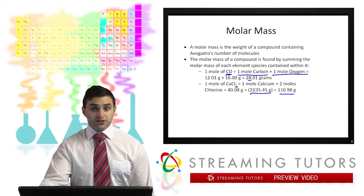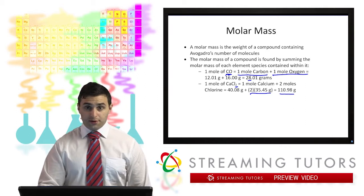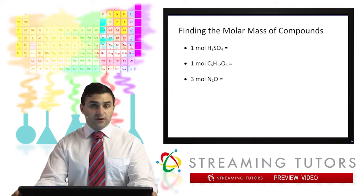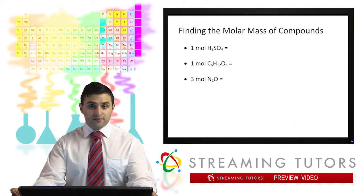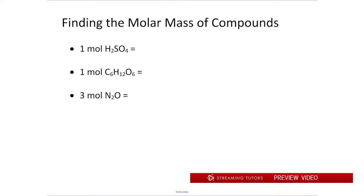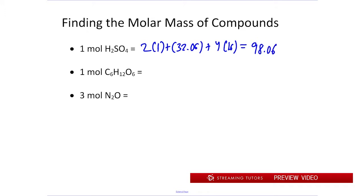Finding the molar mass of a compound is pretty straightforward, but it's also going to be an extremely important skill. Let's find the molar mass of some compounds. First, we have H2SO4. That has two moles of hydrogen, one mole of sulfur, and four moles of oxygen. So we calculate: two hydrogens times a molar mass of about 1, plus one sulfur with a molar mass of 32.06, plus four times 16 for oxygen. Adding all those up, we get 98.06 grams per mole. That signifies there are 98.06 grams in one mole of H2SO4.